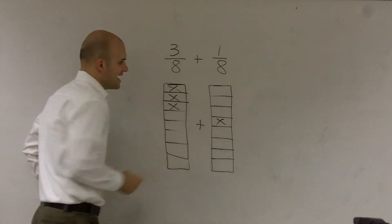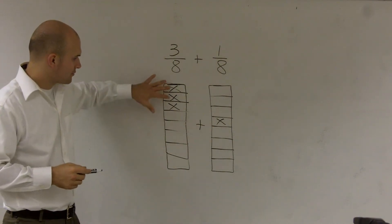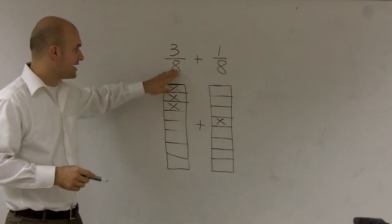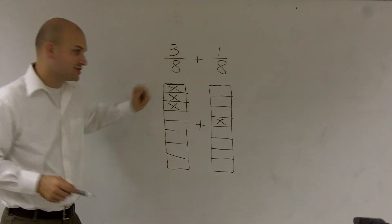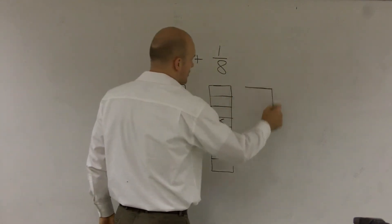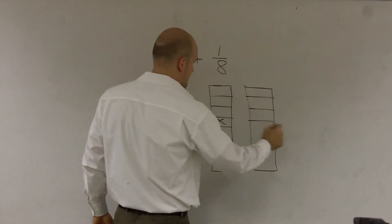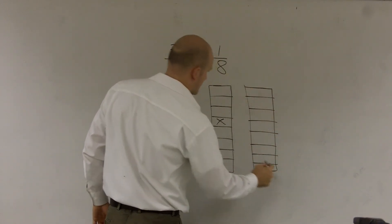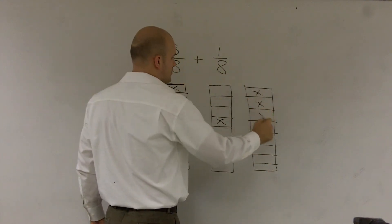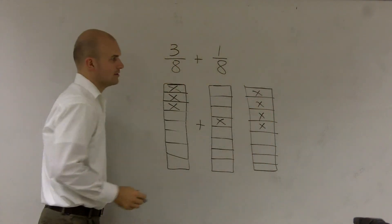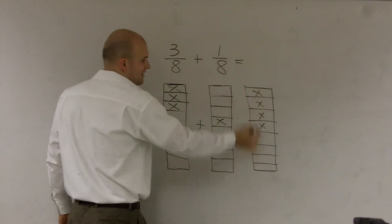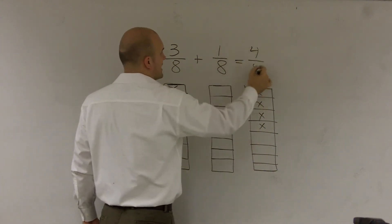So if I was going to add these two together, the three parts plus the one part, out of a total of eight sections... I'm going to add a total of one, two, three, four. So I have, and it's still out of eight sections. So I have four over eight.